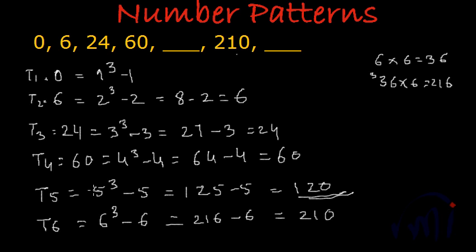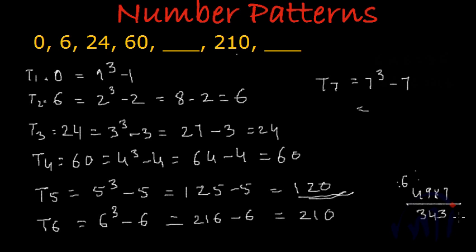What will be the seventh term? T7 equals 7³ - 7. The cube of 7: 7 times 7 is 49, and 49 times 7 is 343. So 343 minus 7 equals 336. The first blank space will be filled with 120 and the second with 336.